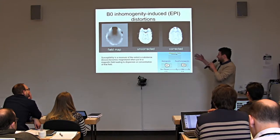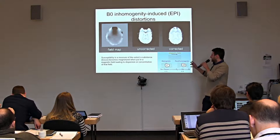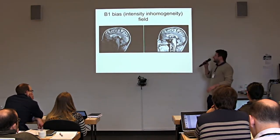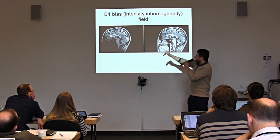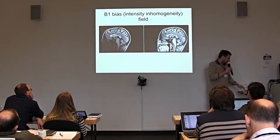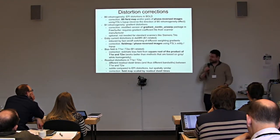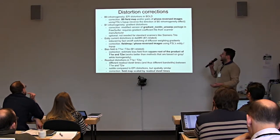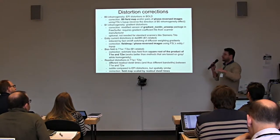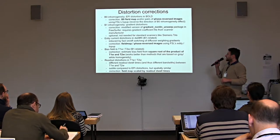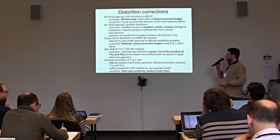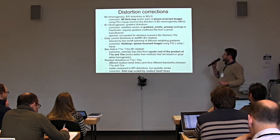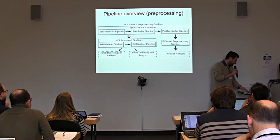We try to correct for this using field maps, though it is not fully correctable because some signal is lost due to this convolution. Bias can also be seen with the naked eye as an intensity gradient — this is an example of bias from B1 fields. We correct B0 inhomogeneity-induced bias, B1 bias, eddy current distortions from fast switching of gradient fields during diffusion imaging, and the bias field. The pipeline overview: a pre-FreeSurfer pipeline for initial corrections, FreeSurfer pipeline, post-FreeSurfer pipeline, fMRI processing and sampling to surface space, and diffusion pre-processing.